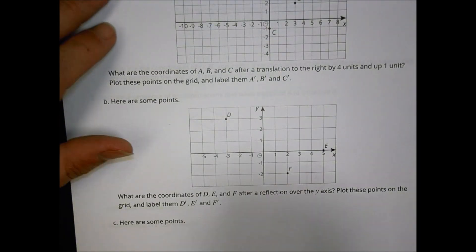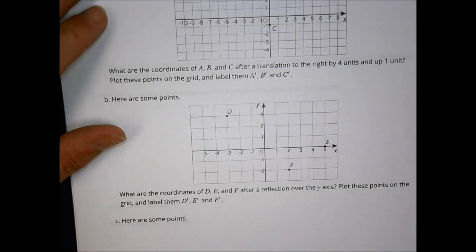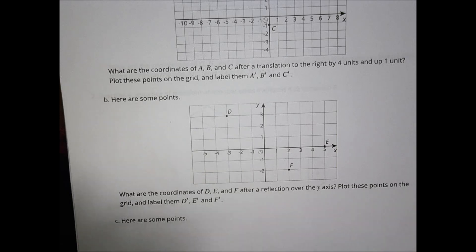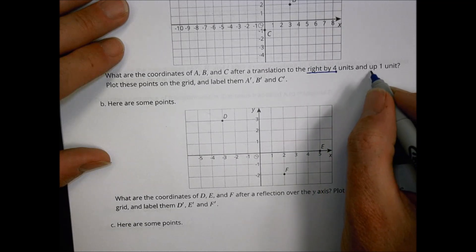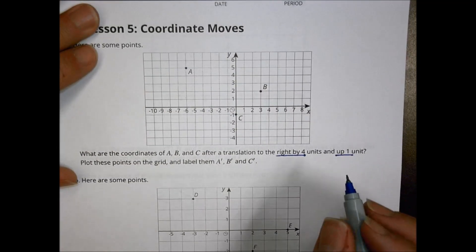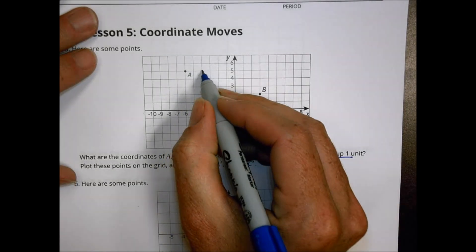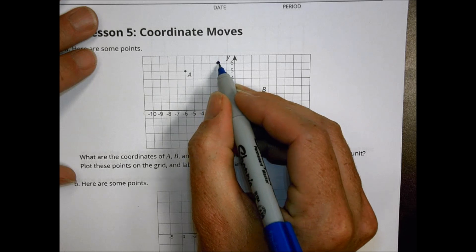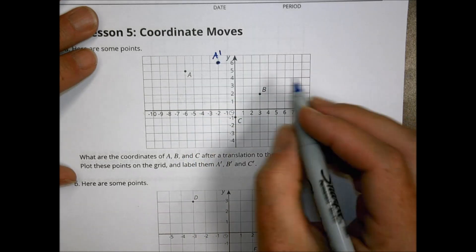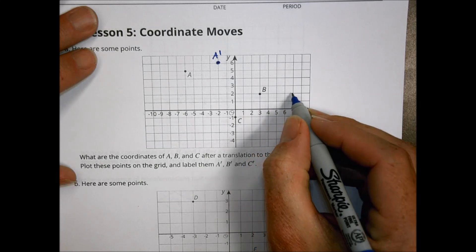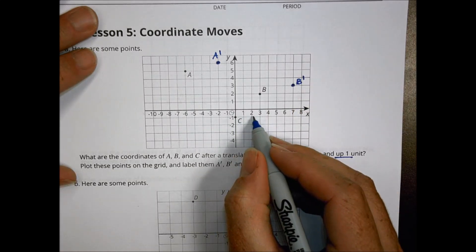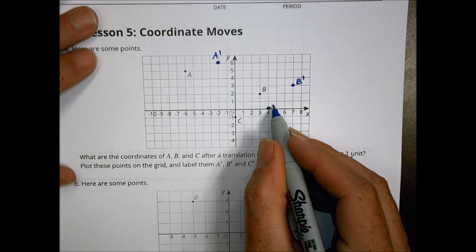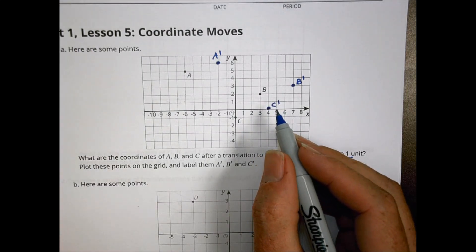Now for the homework on coordinate moves. Problem 1 has points A, B, and C. After a translation right 4 and up 1: starting at A, go right 4 and up 1 to get A prime. Do the same for B — right 4, up 1 gives B prime. And for C — right 4, up 1 gives C prime. That's the first step for number 1.